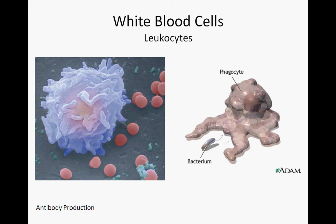Some white blood cells, called phagocytes, will engulf foreign particles, such as invading microorganisms, while others produce antibodies to help destroy anything that might cause disease. These antibodies specifically bind to antigens — molecular identifying flags — that they recognize as foreign. Antibody binding leads to the eventual destruction of the flagged cells.